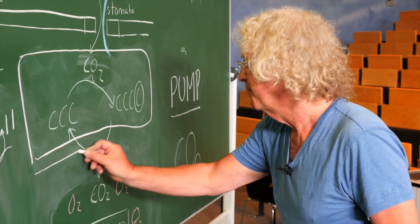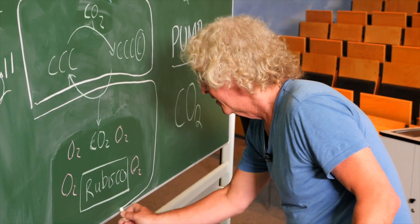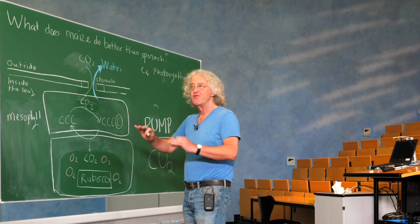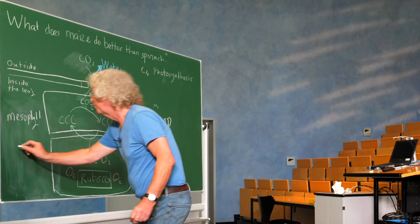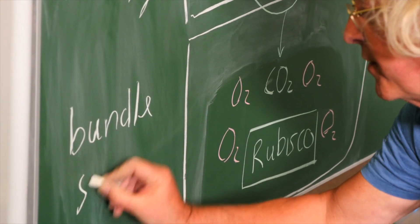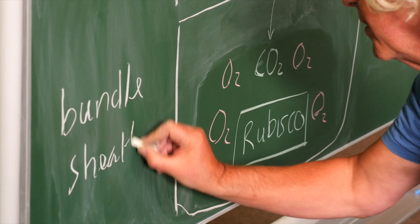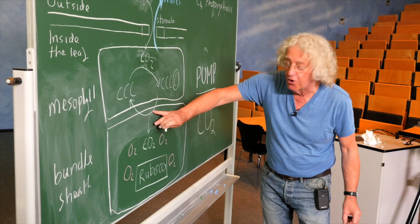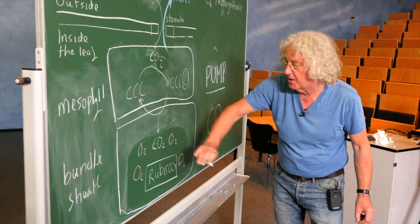The other cell type, which I'm drawing here, this cell type is in the middle of the leaf. It's around the veins. It's called the bundle sheath cells. In this cell type, the carbon dioxide is released out of the four carbon compound. So we have high carbon dioxide.